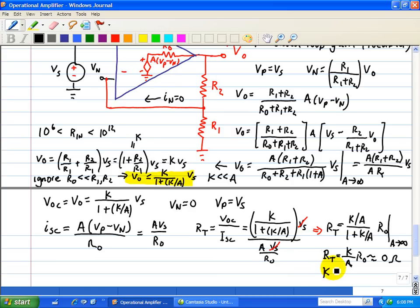That is, when we did the output resistance, we assumed that K is much smaller than the open-loop gain, where K is our closed-loop gain and A is our open-loop gain.